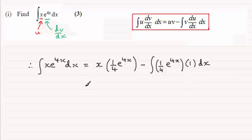The next line is just cleanup. For this term, I'll write x over 4 times e to the power 4x. For this one, I'll pull out the constant as minus a quarter, and then the integral of e to the power 4x times 1 is just the integral of e to the power 4x with respect to x.